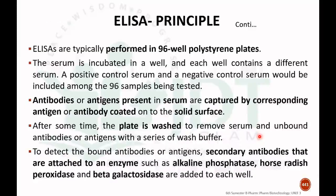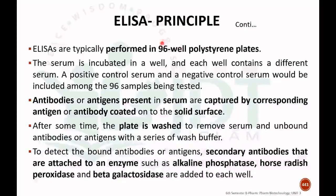ELISA is typically performed in 96-well polystyrene plates. The serum is incubated in the wells, with each well containing a different serum. A positive control serum and a negative control serum are included among the 96 wells being tested.